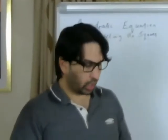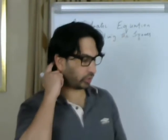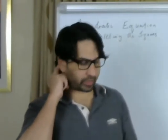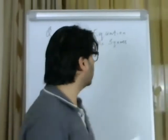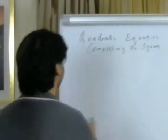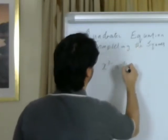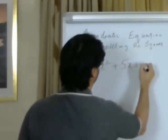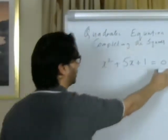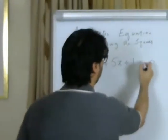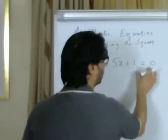Hello there, good evening all. Today we're going to learn quadratic equations using the completing the square method. I'll put the equation up on the board: x squared plus 5x plus 1 equals 0. That's the quadratic equation, and this time it has a root so it equals 0.